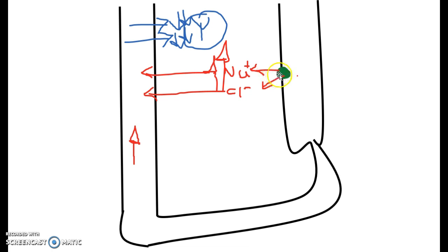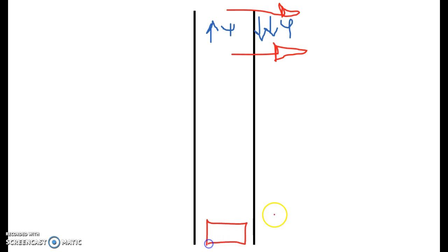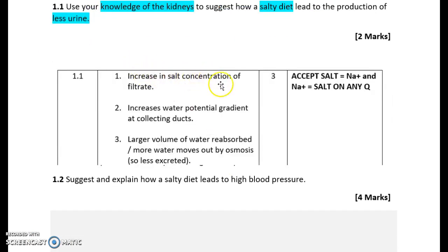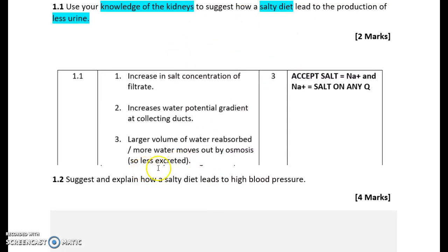More salt means less urine. Because there's more salt, even more sodium and chloride ions are pumped out into the medulla, so the water potential gradient increases because this water potential is even lower than before. That means a larger volume of water will leave - more water will be reabsorbed into the cells lining the collecting duct, and therefore very little water will be present in urine. The mark scheme confirms: increase in salt concentration in filtrate increases water potential gradient at collecting ducts, larger volume of water reabsorbed by osmosis, therefore less urine is excreted.